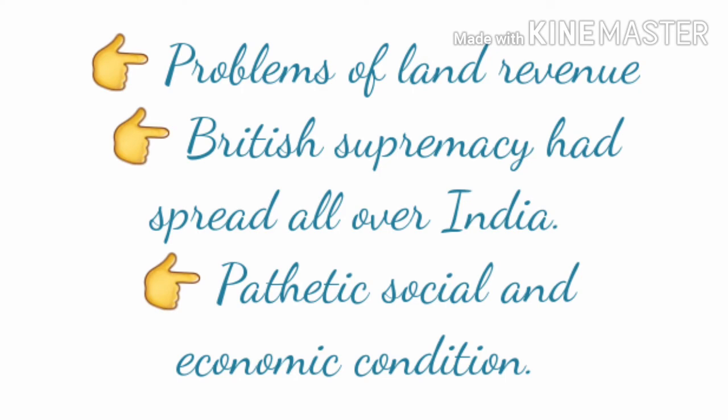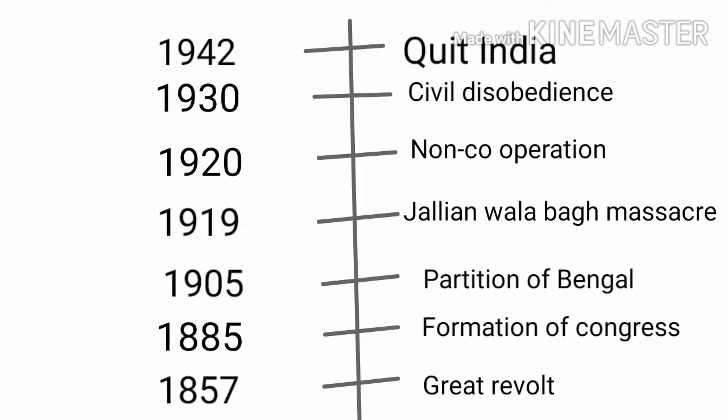Next, prepare a timeline based on the following events. A timeline is a list of events in the order that they happened. You are given some events and their years — prepare the timeline by arranging them in order of events and year.